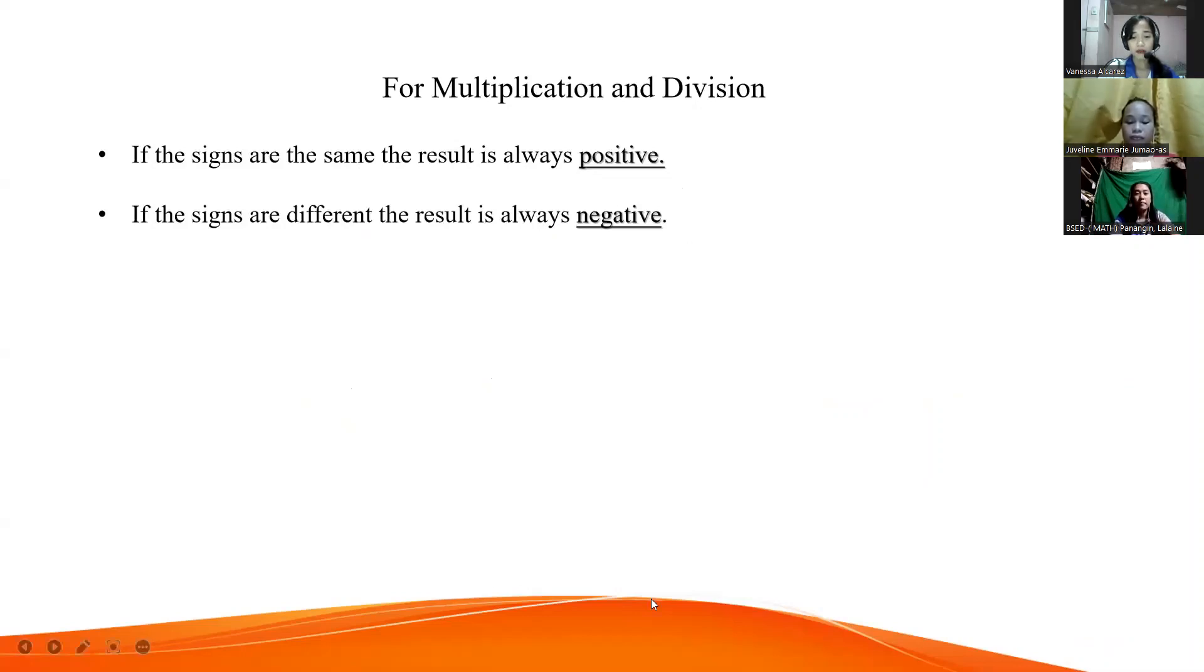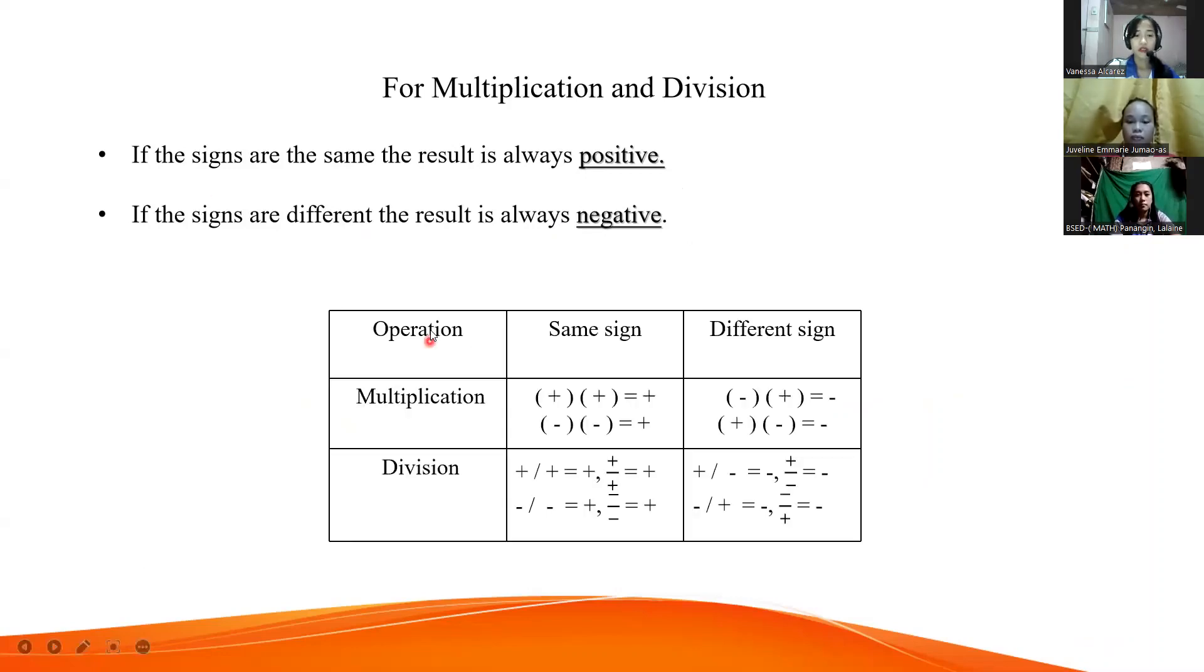In this column, you can see the operation - multiplication and division. And in here is the sign - same sign and different sign. In multiplication, when you multiply positive and positive, the result is positive. And negative times negative, the answer is positive.